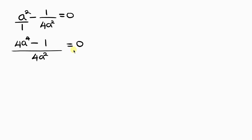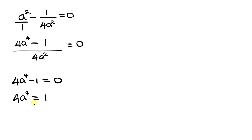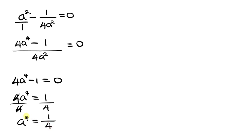Moving −1 to the right-hand side gives 4a⁴ = 1. Dividing both sides by 4: a⁴ = 1/4. To remove the fourth power we take the fourth root of both sides, so a = ±(1/4)^(1/4).